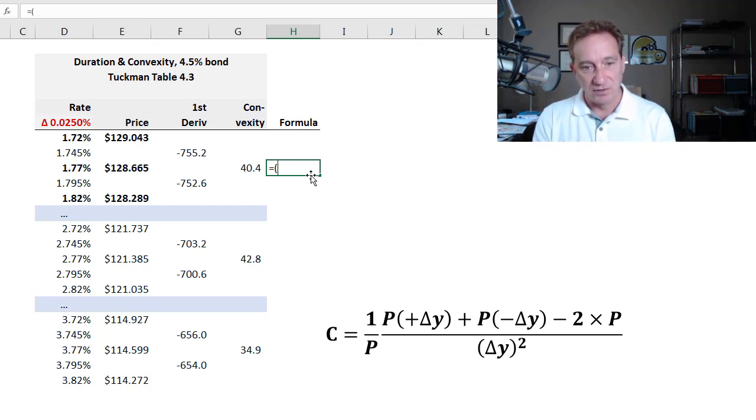Price if the yield goes up is right here. Although my order doesn't really matter here. And then I'm going to add the price if the yield goes down. See, I'm right here. And then I'm going to subtract two multiplied by the price in the middle. And that's my numerator here. And then I'm going to divide by the yield shock squared. And that's where I do want to be consistent.